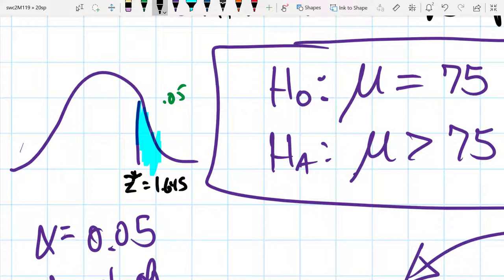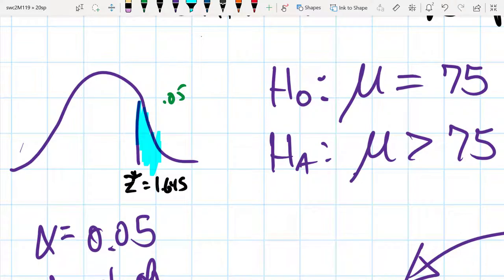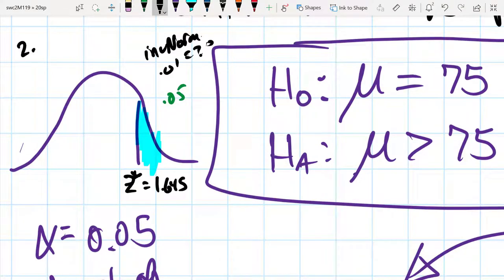Had I chosen maybe 0.01, then we would have ended up with a different critical value where we take the inverse norm of 0.01, which would be 2.326. That would be the critical value for a confidence level of 0.01.